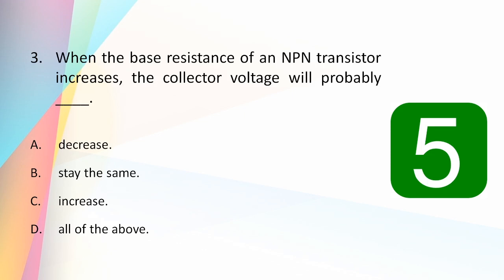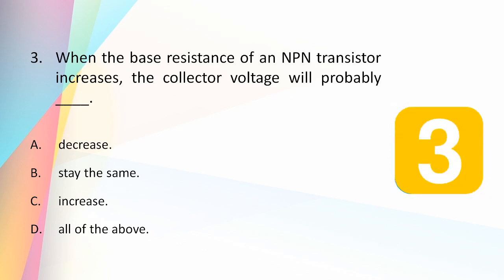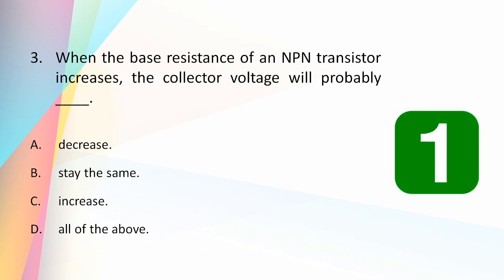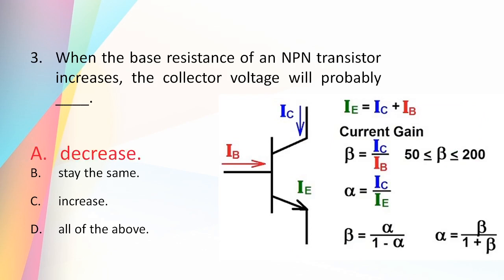When the base resistance of an NPN transistor increases, the collector voltage will probably: decrease, stay the same, increase, or all of the above? The answer is decrease. If the resistance increases, the voltage drop across the resistance also increases, so it does not provide the exact voltage to the loop. Hence the collector voltage will probably decrease when the base resistance of an NPN transistor is increased.